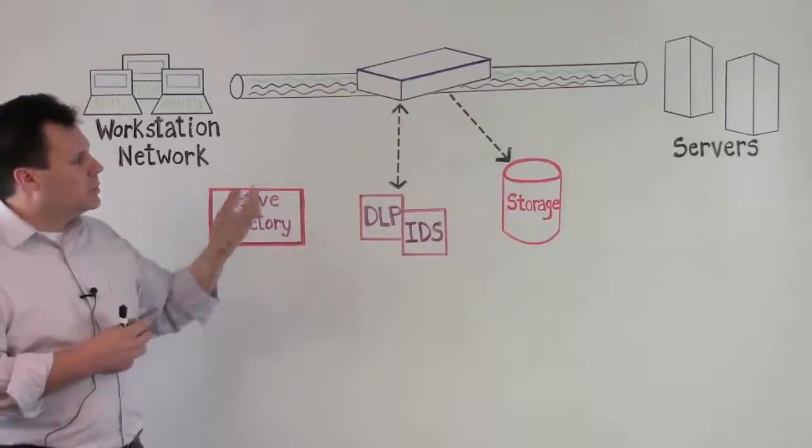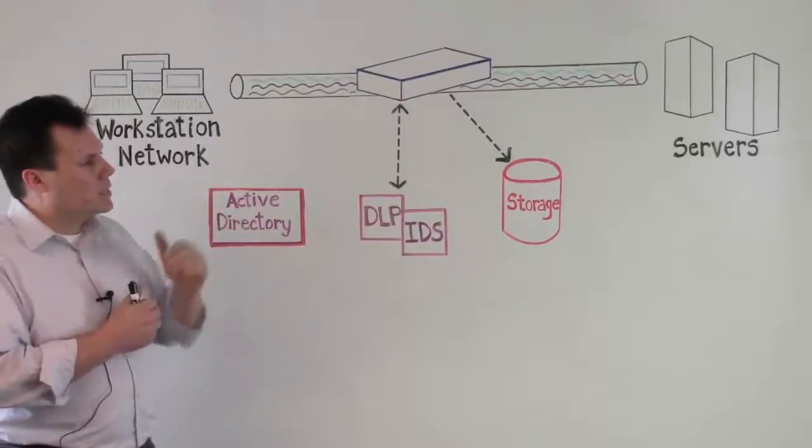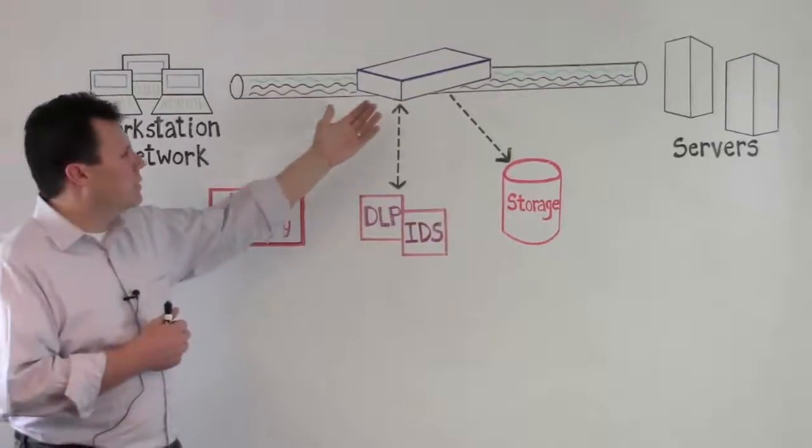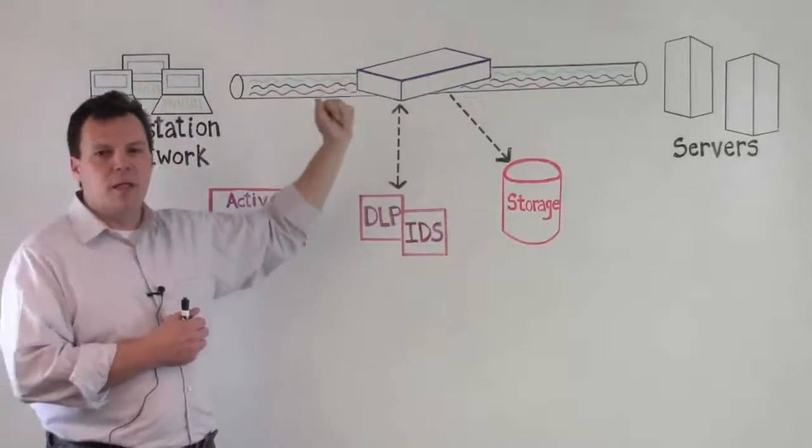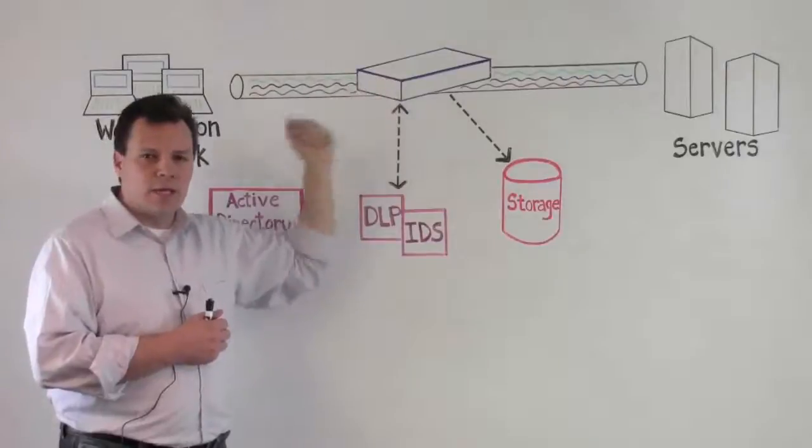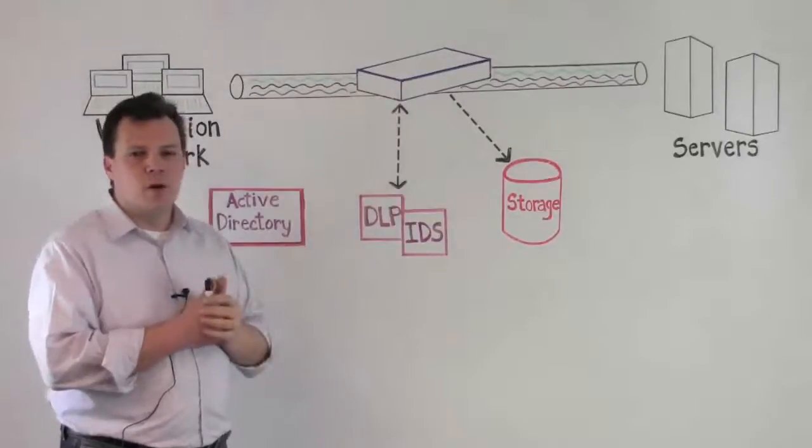So if you want to be monitoring these kinds of encrypted channels, you need to have an inline appliance that is able to act as a friendly man in the middle, essentially seeing inside of those pipes and seeing what's going on.